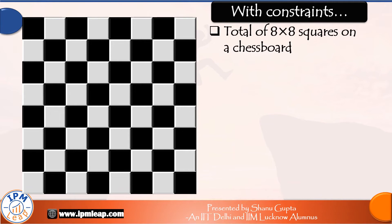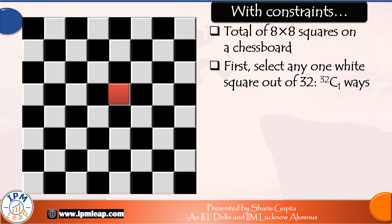Now let's solve our original question with constraints. Let's pick the white square first, and by the way, even if you pick the black square first it will not change your answer. So any one white square out of 32 can be selected in 32C1, that is 32 ways.